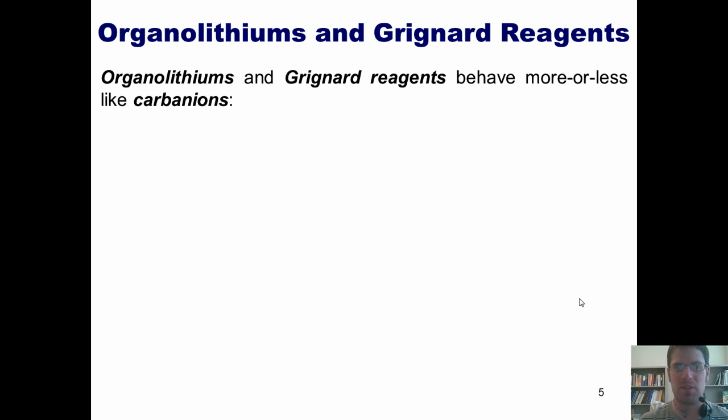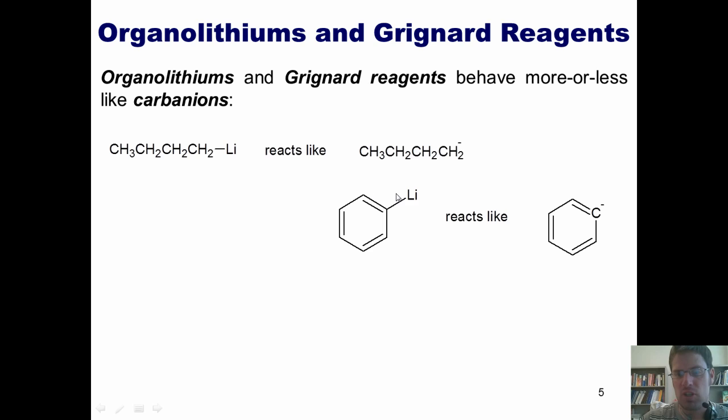So what in the world can we do with these types of reagents? Well, organolithiums and Grignard reagents behave more or less like carbanions. For example, if I've got this type of molecule stuck to a lithium, which is called butylithium, it essentially behaves as if there's a negative charge on the carbon that's bonded to the lithium. So it would behave kind of like this molecule right here where there's a negative charge on this carbon. Similarly, phenylithium shown here would react more or less as if there were a negative charge on this carbon right here, as I've indicated here. Similarly, a Grignard reagent, such as the one shown here, behaves more or less as if there's a negative charge on this carbon, the one bonded to the magnesium, as shown here.